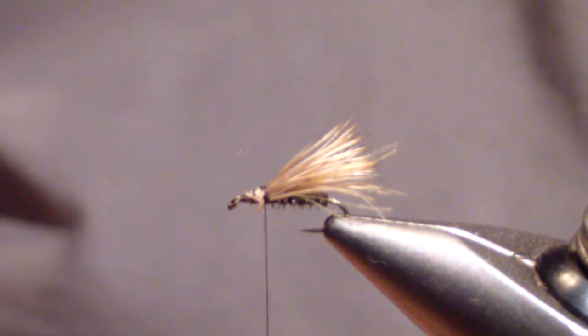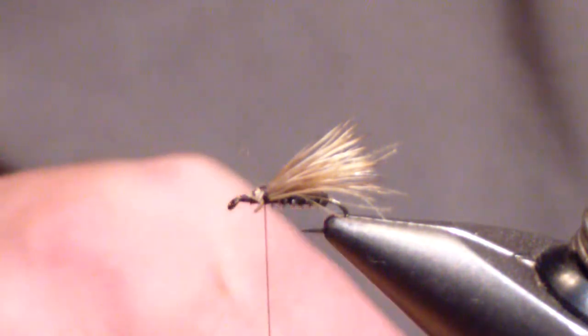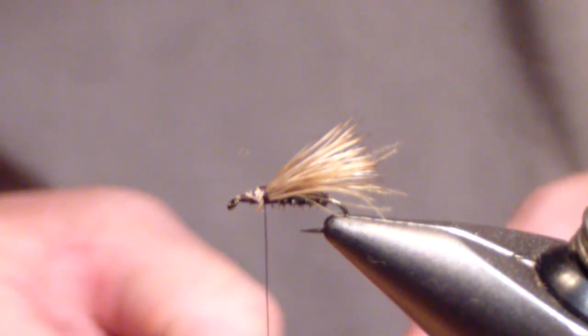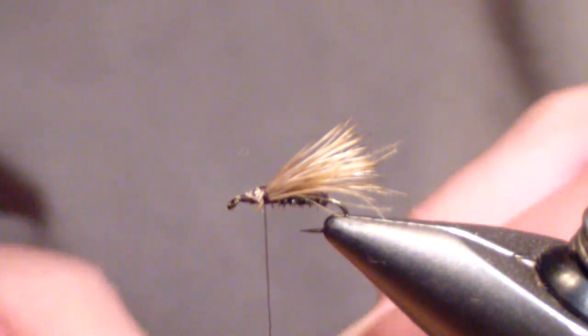Next you're going to tie in your hackle. For this version of the Pens Granum, I tie in a silver badger hackle. Tie it in at the side of the hook.